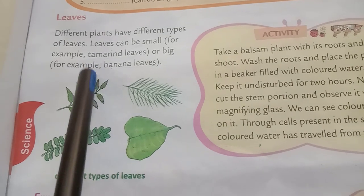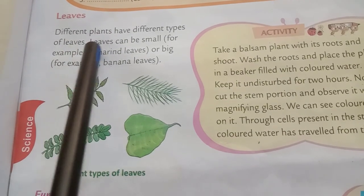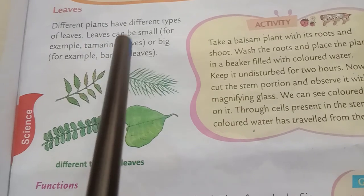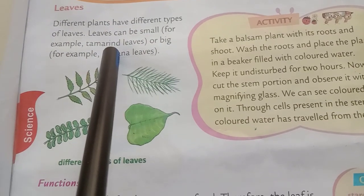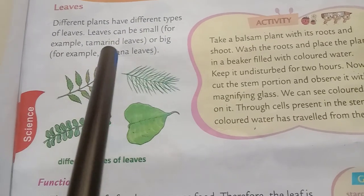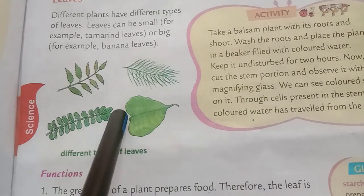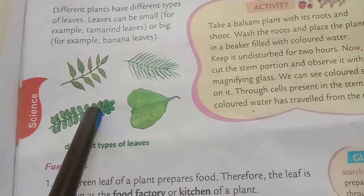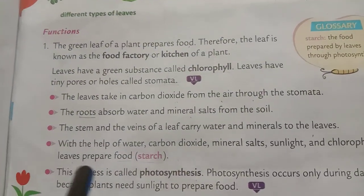Now we will learn about leaves. Different plants have different types of leaves. Leaves can be small — for example, tamarind leaves — or big — for example, banana leaves. You can see the picture here.